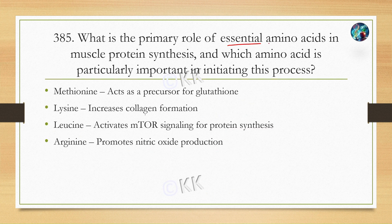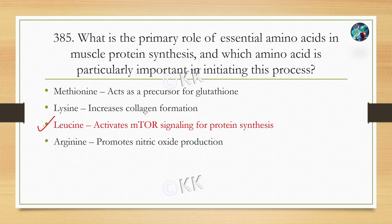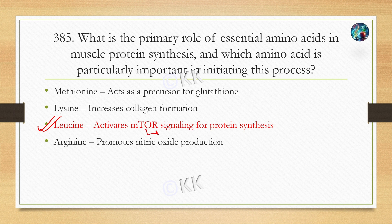What is the primary role of essential amino acids in muscle protein synthesis, and which amino acid is particularly important in initiating this process? Option A: methionine acts as precursor for glutathione. Option B: lysine increases collagen formation. Option C: leucine activates mTOR signaling for protein synthesis. Option D: arginine promotes nitric oxide production. The correct option is C: leucine activates mTOR signaling for protein synthesis. Leucine is a branched-chain amino acid particularly important for activating the mTOR signaling pathway, which plays a key role in initiating muscle protein synthesis. This process is crucial for muscle growth, repair, and recovery, especially after exercise.